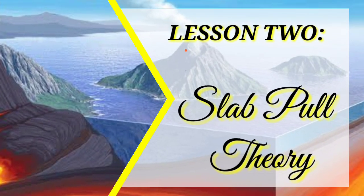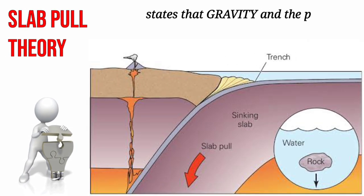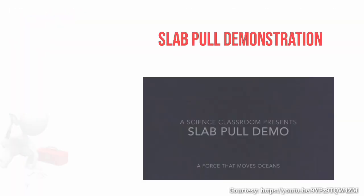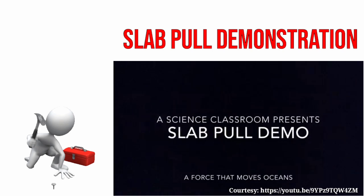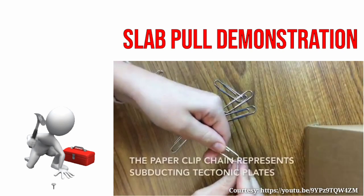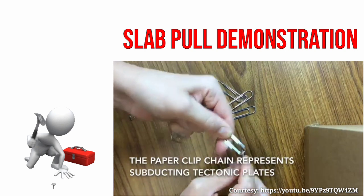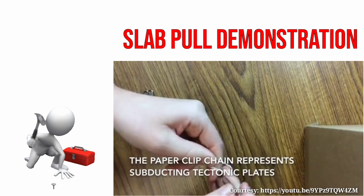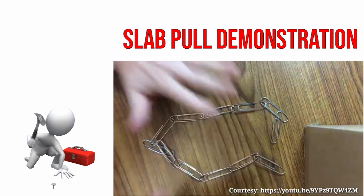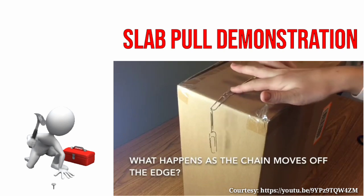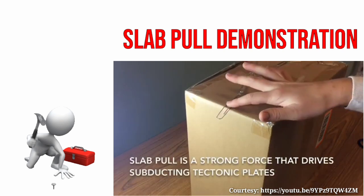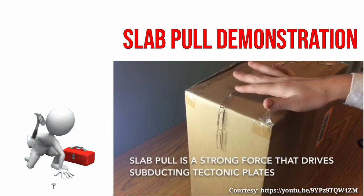Next is Lesson 2: Slab-pull theory. Slab-pull theory states that gravity and the plates themselves are responsible for plate tectonics through the subduction process. To clearly explain how slab-pull works, let's take a closer look at this simple demonstration. Here, the paper clip chain represents subducting tectonic plates. Now look closely at what happens as the chain moves off the edge. This simple demonstration explains that slab-pull is a strong force that drives subducting tectonic plates.